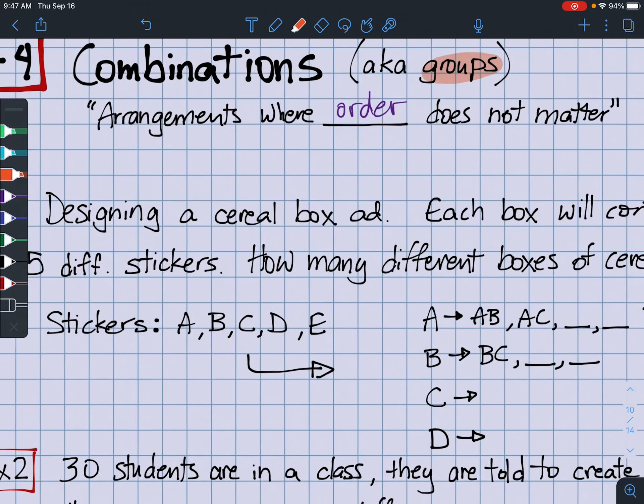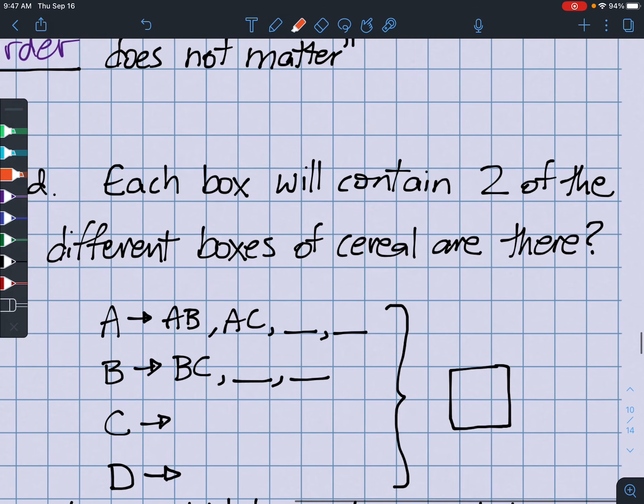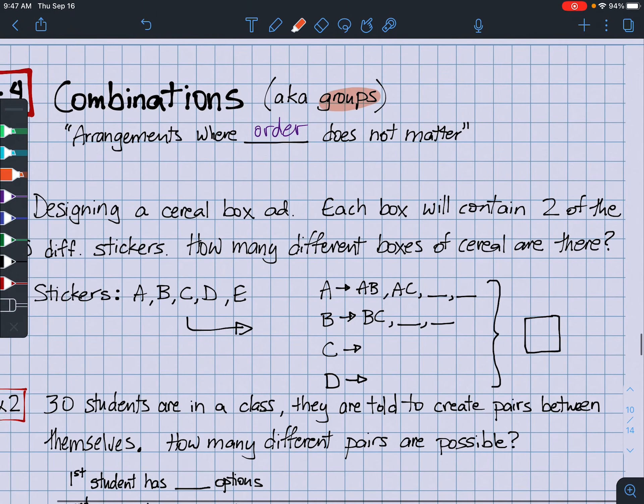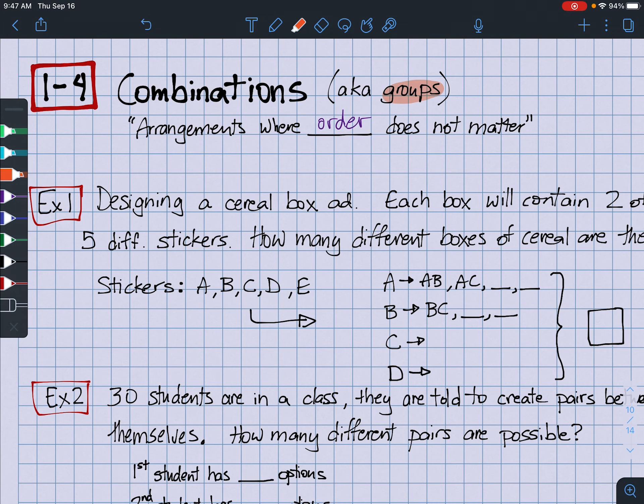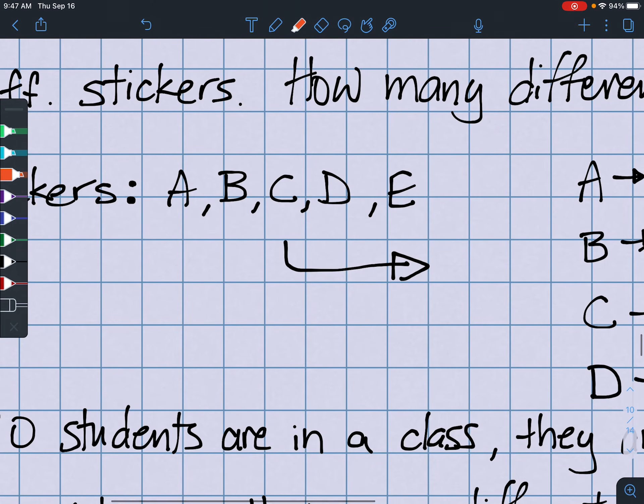We're designing a cereal box ad, advertisement for a company, let's say it's Kellogg or something like that. Each box contains two of the five different stickers. How many different boxes of cereal are there of our particular, I don't know, whatever it is, Captain Crunch, Rice Krispies, whatever Trix kids eat these days, right? So think about the stickers. We've got A, B, C, D, E, right? And I have to put them in. Like, the machine's going to put in two of those, any two. Could be those two, could be these two, right? Whichever.